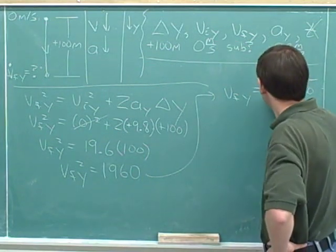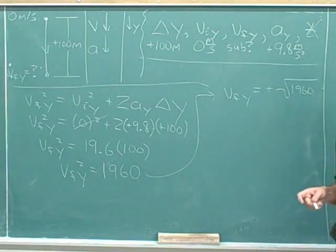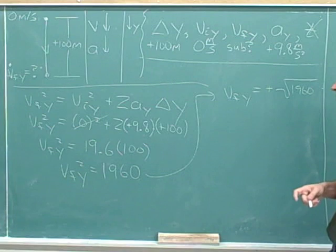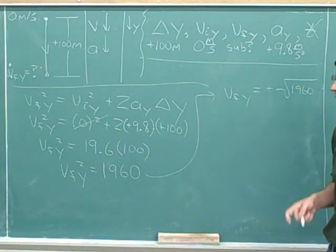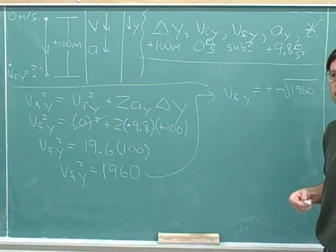So on this problem, it only makes sense to pay attention to the positive square root because we know that we're going to be moving down the instant before we hit the ground, and that's our positive direction. So in this problem, we're not going to pay attention to the negative square root.